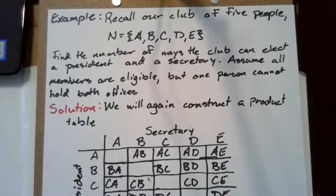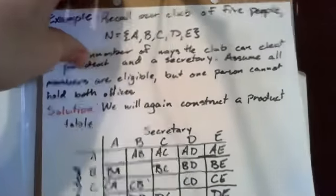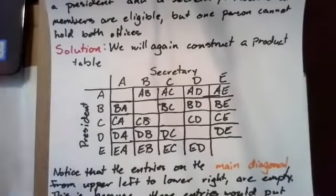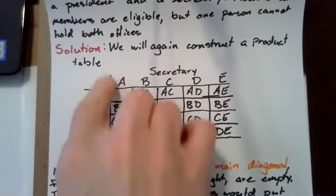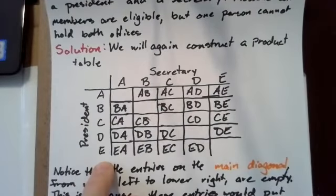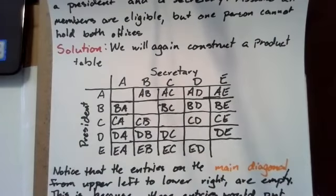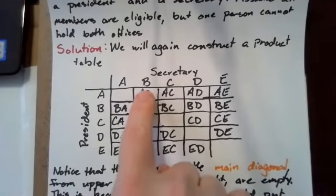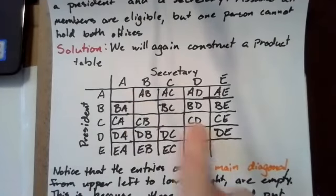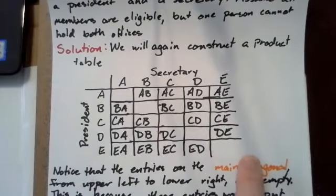So again, we construct a product table. Along the vertical axis, we have the candidates for president, and along the top horizontal axis, we have the candidates for secretary. Here we have blanks diagonally because the entries on the main diagonal are empty.